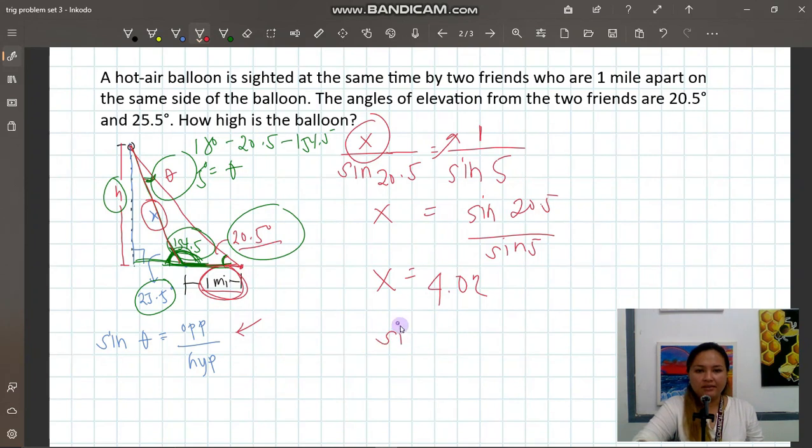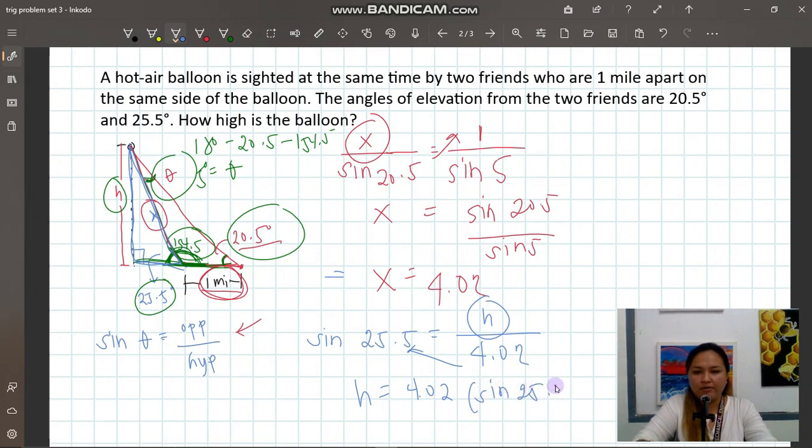Because sine theta is equal to opposite - wherein if our theta here is this, the 25.5. Sine 25.5 is equal to the opposite of 25.5, which is H, and that's what we are looking for, over the hypotenuse of this blue triangle. Let me clarify again - of that blue triangle, our hypotenuse here is the X, wherein we found that to be 4.02. So cross multiply, H is equal to 4.02 times sine 25.5.